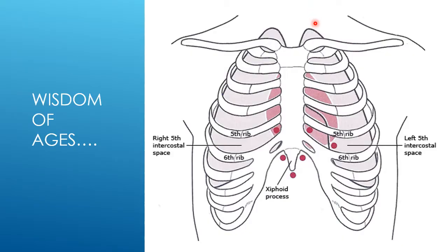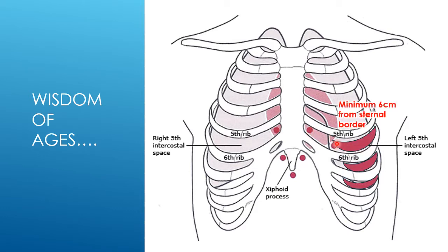Every cardiac textbook that describes pericardiocentesis shows basically the same diagram with the various approaches. Subcostally, we can go around the xiphoid process. Apically, rather than just one fixed point, we can go in a wide range so long as we're lateral to the internal mammary artery — this is really defined by the echo window, a minimum of six centimetres from the sternal border, though I would almost always be substantially further round than that. The parasternal approach should be within a centimetre of the sternal border, and you can even go on the right-hand side.